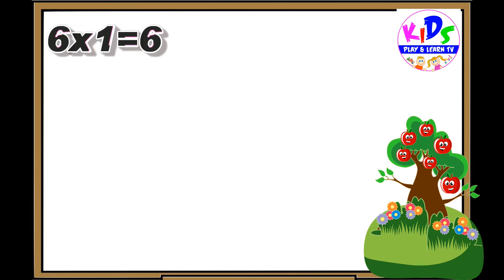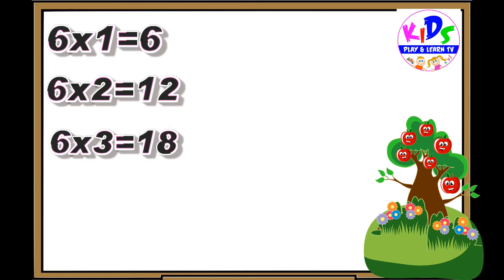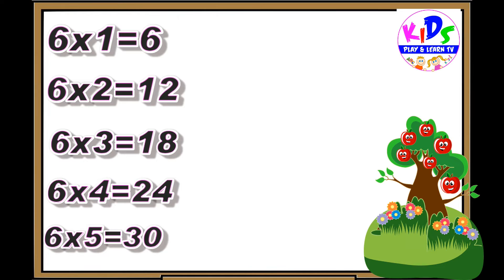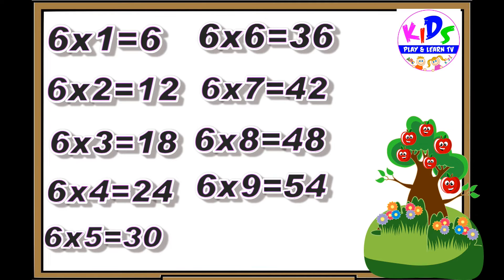Hey kids, let's repeat. Six ones are six. Six twos are twelve. Six threes are eighteen. Six fours are twenty-four. Six fives are thirty. Six sixes are thirty-six. Six sevens are forty-two. Six eights are forty-eight. Six nines are fifty-four. Six tens are sixty.